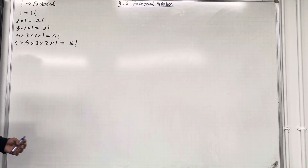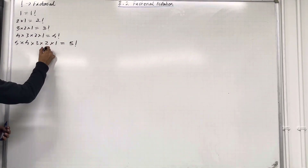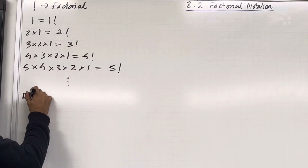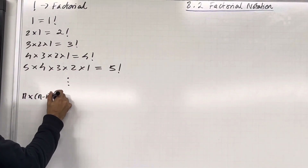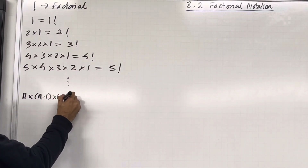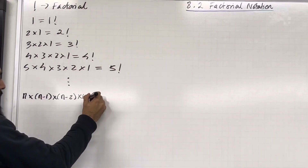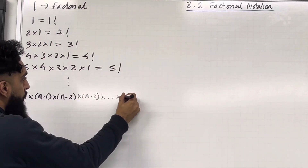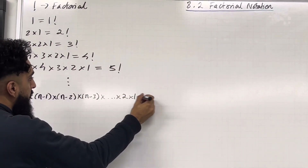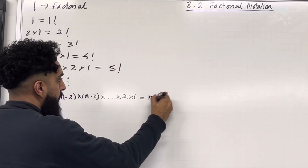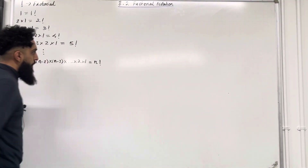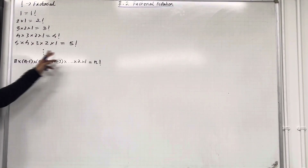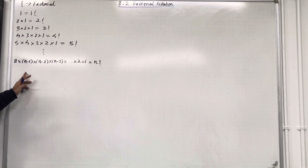5 times 4 times 3 times 2 times 1 can be written as 5 factorial. Let's generalise this. n times n minus 1 times n minus 2 times n minus 3 times ... times 2 times 1 can be written as n factorial. So n factorial is defined as follows. That's very important.